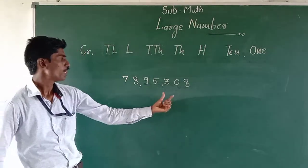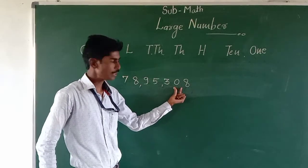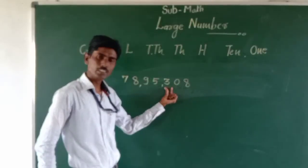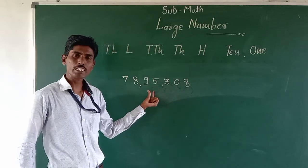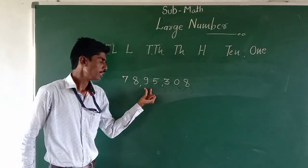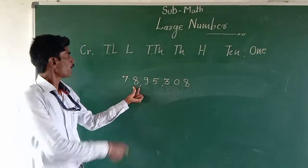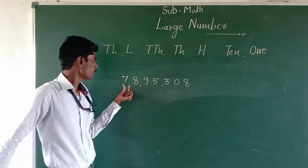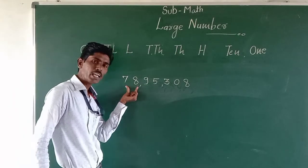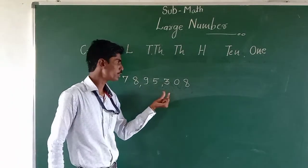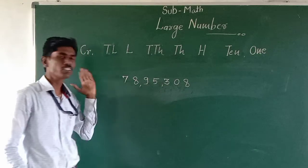So this 8 is on the ones place, then 0 is on the tens place, then 3 is on the hundreds place, then 5 is on the thousands place, 9 is on the ten-thousands place, 8 is on the lakhs place, and 7 is on the ten-lakhs place. So the value of this number is 78,95,308.